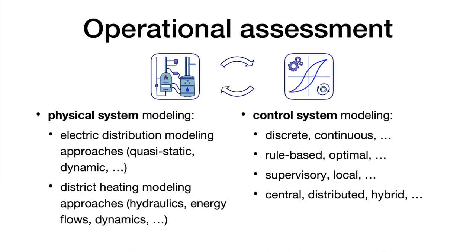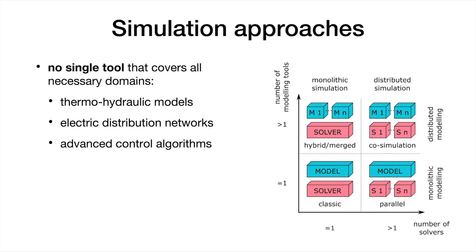A big question is: can we simulate all of this? Unfortunately, there is no single tool that allows us to have a detailed thermal hydraulic model of a district heating network, a detailed electrical distribution network, and also include model predictive control or supervisory control. One possible solution is co-simulation, which allows you to use the most suitable tool — or the tool you are most familiar with — to set up your simulation.